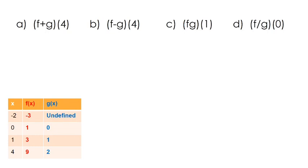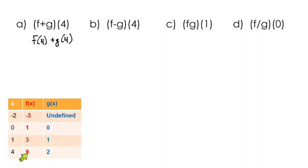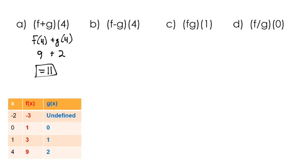Let's start with the table. We're going to do the function sum f plus g of 4, which is the same as f of 4 plus g of 4. We look up f of 4 in the table — the value of the f function when x is 4 is 9. Then g of 4, the value of g when x is 4, is 2.